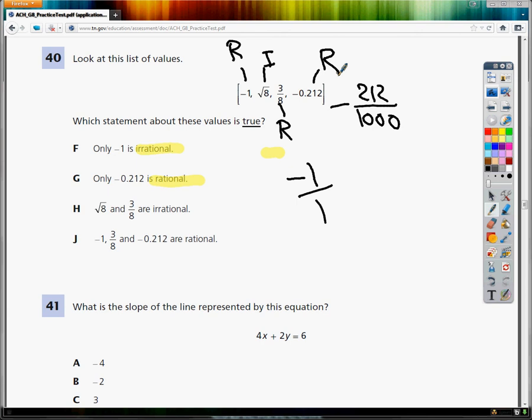So F says that only negative 1 is irrational, but it's not, so that's out. G says only negative 0.212 is rational. Well no, there's two other rationals.